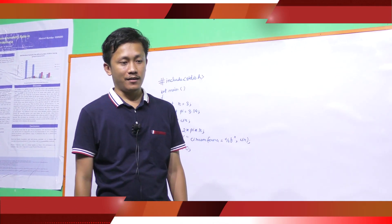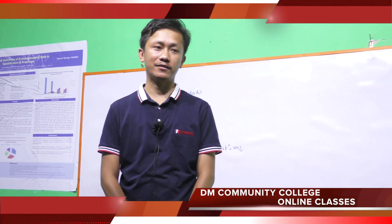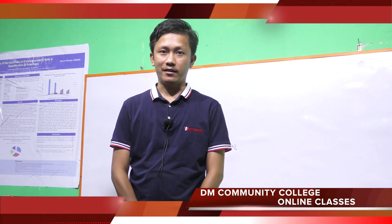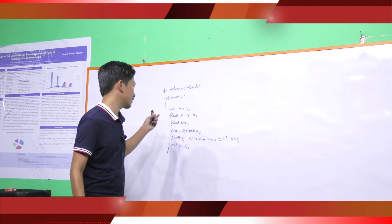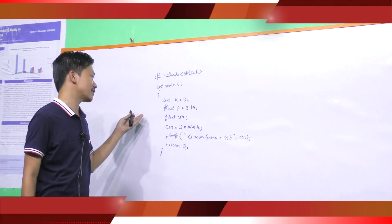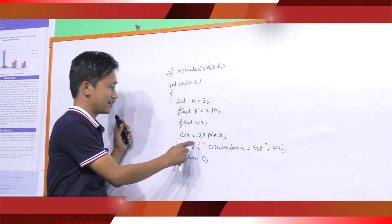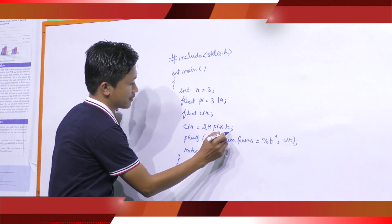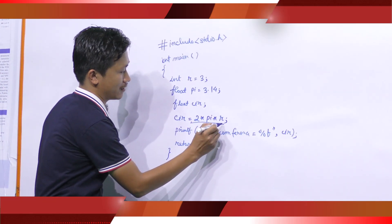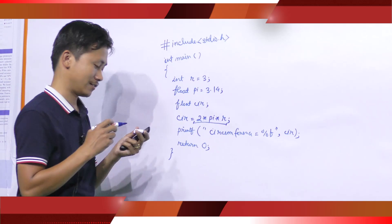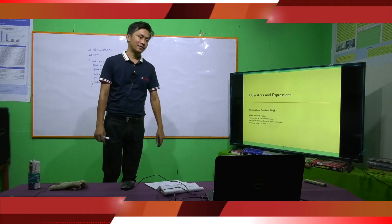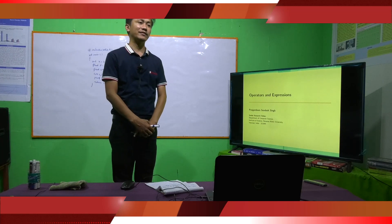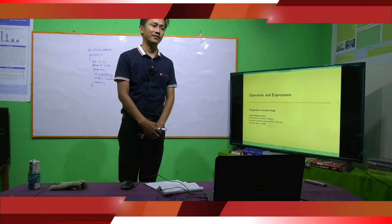Expressions are the basic unit of evaluation in C. Expressions have a value of a particular type. Consider the last program to find out the circumference of a circle — this is an example of an expression in C. Expressions are formed by connecting different data items like variables or constants by using operators.